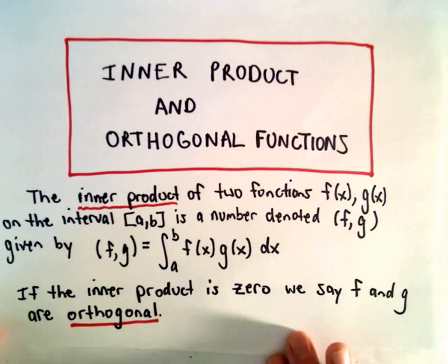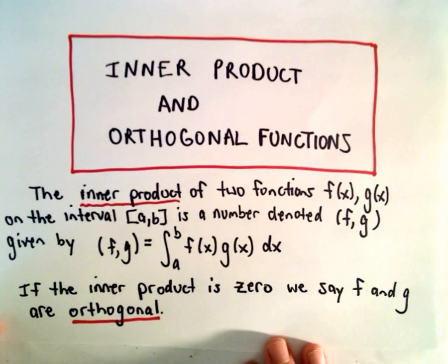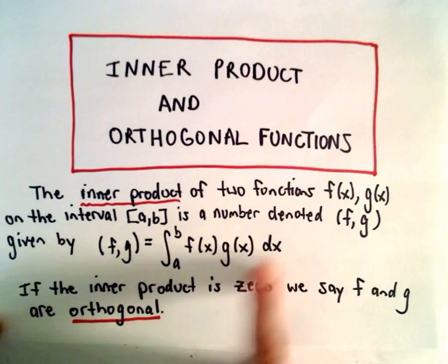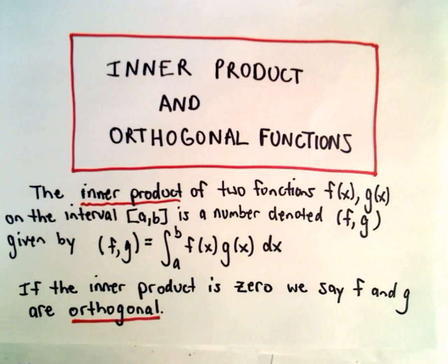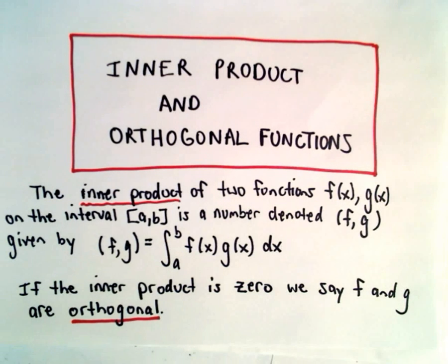All we do to find the inner product is just multiply them and integrate over the desired interval. If this inner product ends up equaling zero — so when we calculate the definite integral, if we get zero — we say that those functions f and g are orthogonal. Functions being orthogonal turns out to be something important, and we'll see that in some following videos.